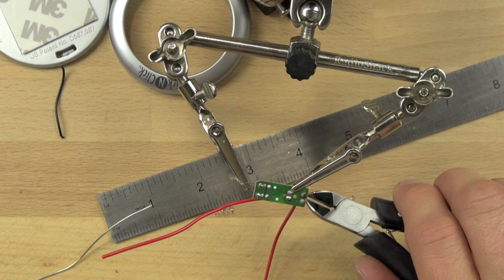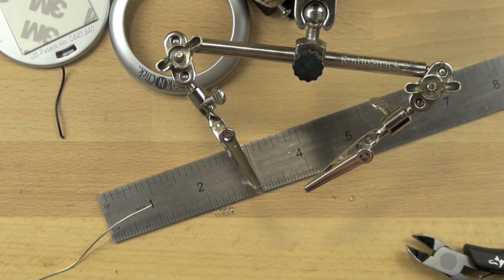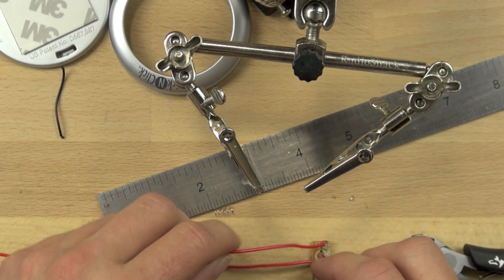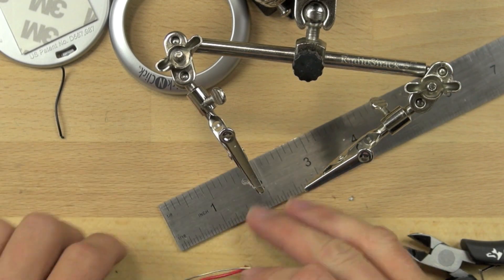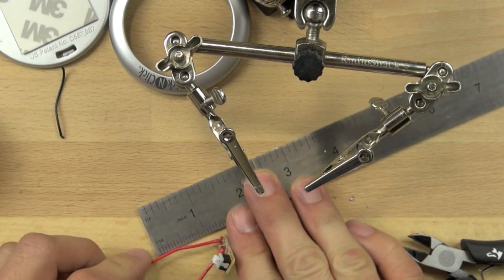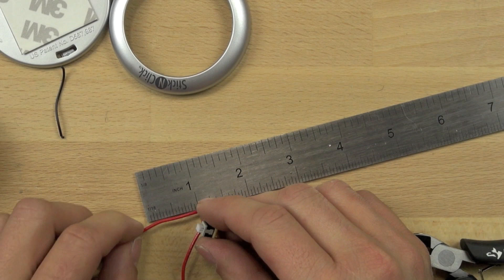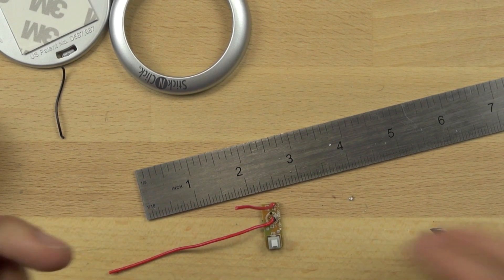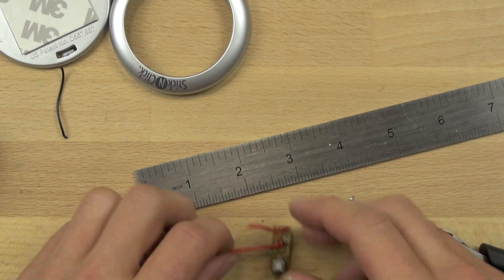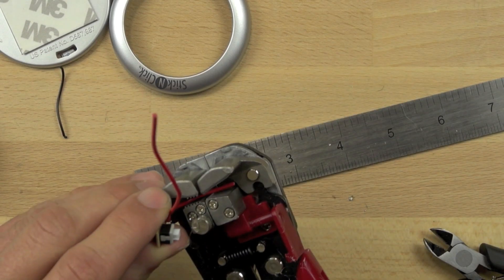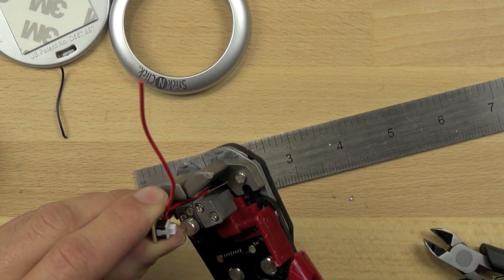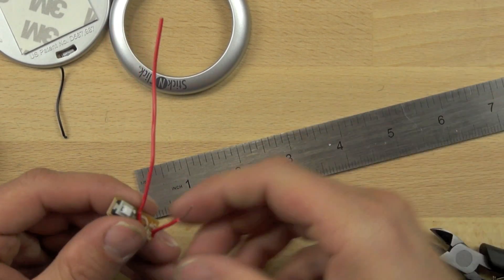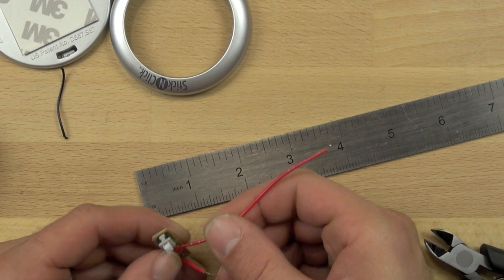So now we're going to take our nipper pliers and just trim off the excess material there. Then we'll take one of our red wires and we're going to cut it down to about an inch long. It doesn't matter which one of the two red wires you decide to trim down. Then we'll take our wire strippers and take off about a quarter inch of the insulation on our wire. And so now it's ready to be connected to our bot.